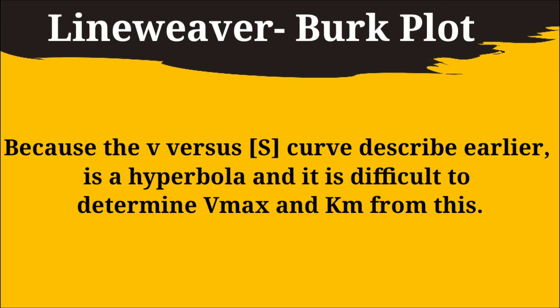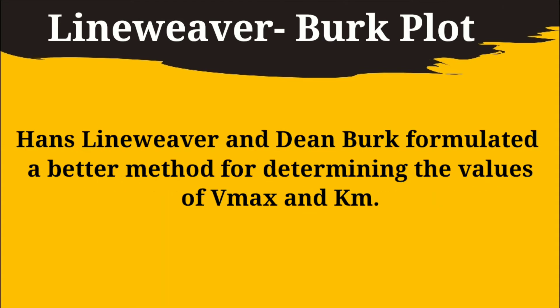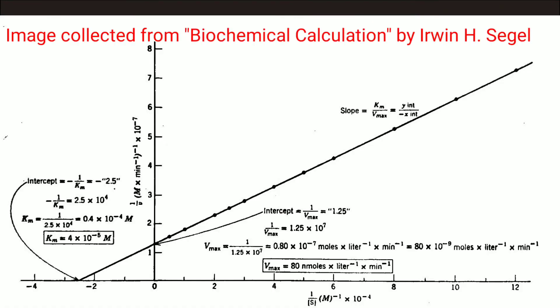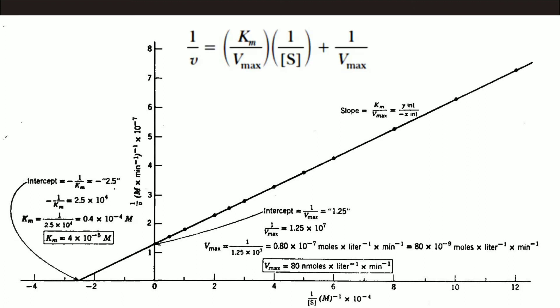I hope you have remembered the V0 versus S progress curve. It is a rectangular hyperbola and determining the value of Km and Vmax from this graph is quite difficult. So two other scientists called Lineweaver and Burk derived a simple equation for you. So that you can calculate the value of Km and Vmax very easily.